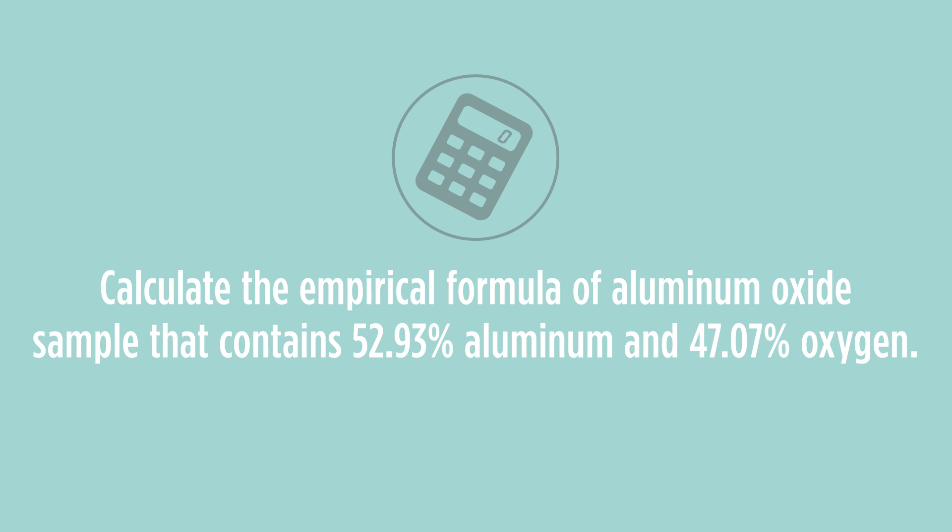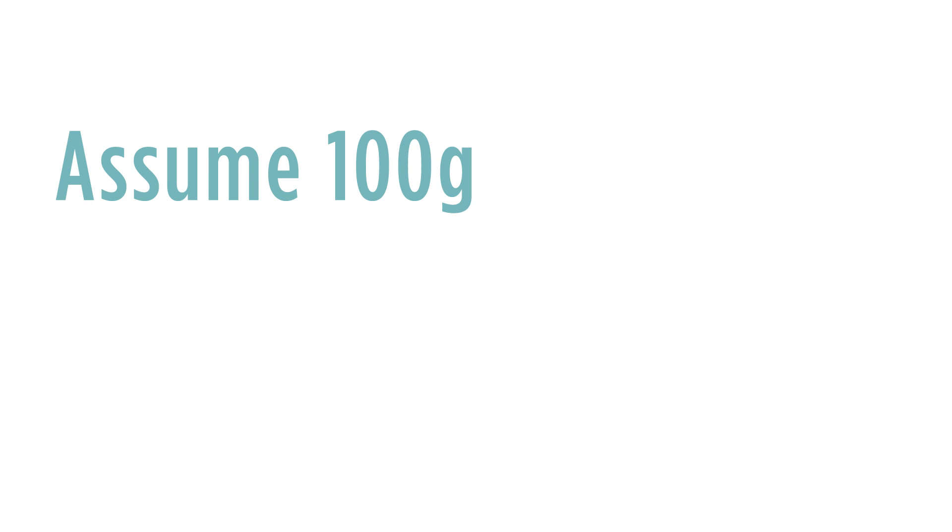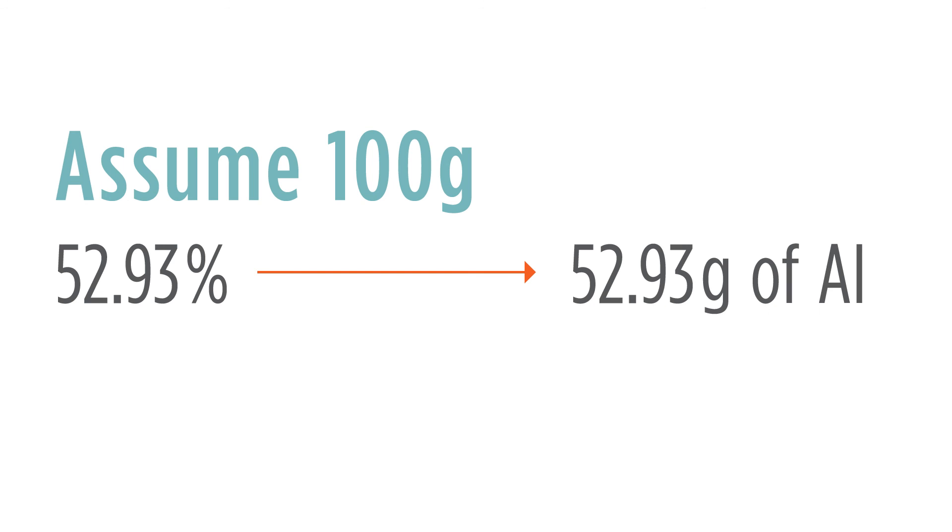The first thing we're going to do is assume that we have 100 grams. When we assume we have 100 grams, that means that our 52.93% of our sample would actually be 52.93 grams of aluminum. Our 47.07% would likewise be 47.07 grams of oxygen.